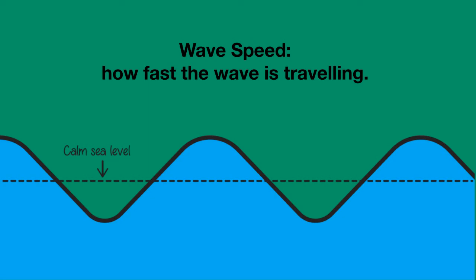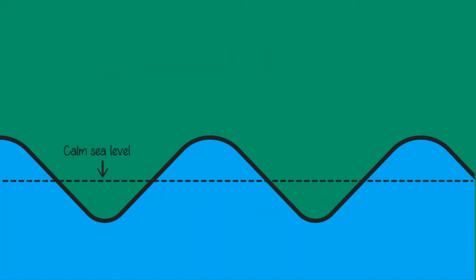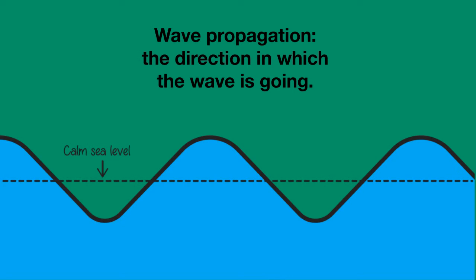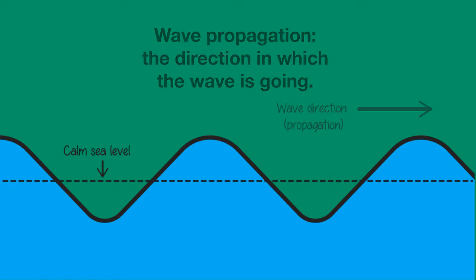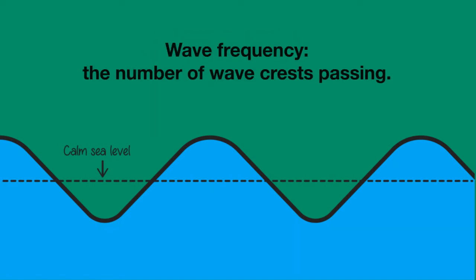Waves can travel quickly or slowly — we call how fast the wave is travelling the wave speed. Waves go in a certain direction, and we call this direction the wave propagation. The number of wave crests passing in a certain time period is called the wave frequency.